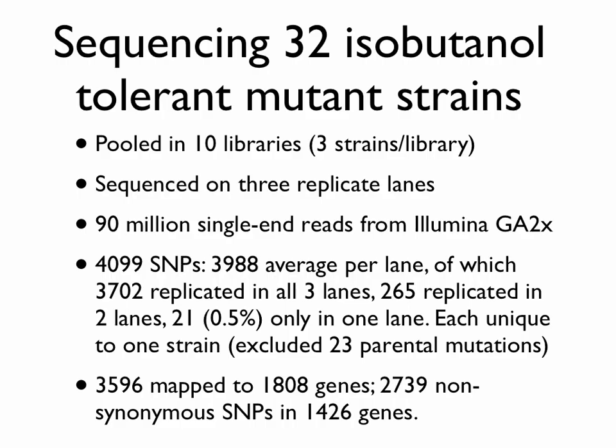Our first experiment was on the isobutanol tolerance strains. Initially they gave us 32 strains, pooled into 10 libraries — most with three strains per library, a couple with four. When we first did this, we actually did three replicate lanes, which turned out to be completely unnecessary — we didn't get anything more from replicate lanes than from an individual lane. About 4,000 individual variants were identified over this dataset. At the time, it was the largest dataset of NTG mutagenesis, so we also did some analysis of the biases of NTG mutagenesis.